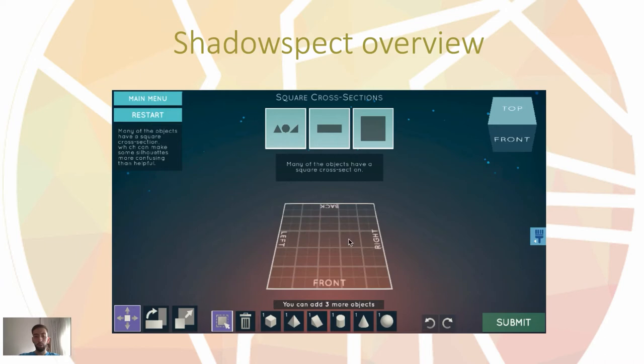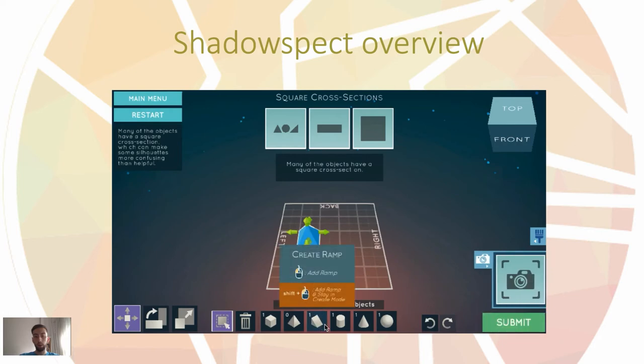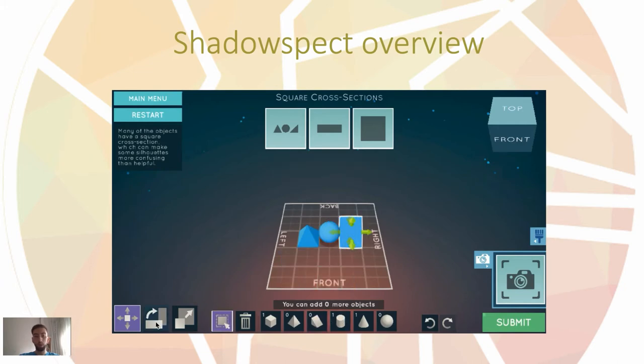We can put those primitive shapes wherever we want on the scenario and we can also make some actions with them, like for example the action we're seeing now which consists of rotating the shape.